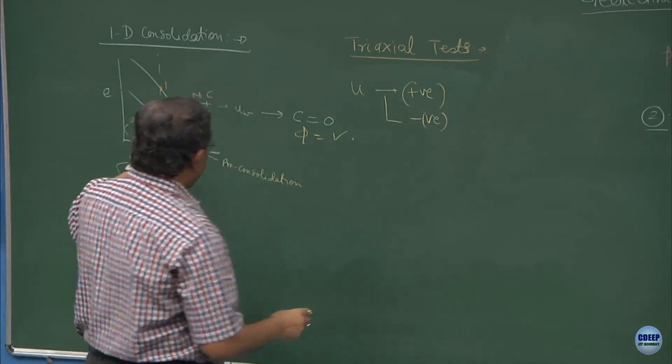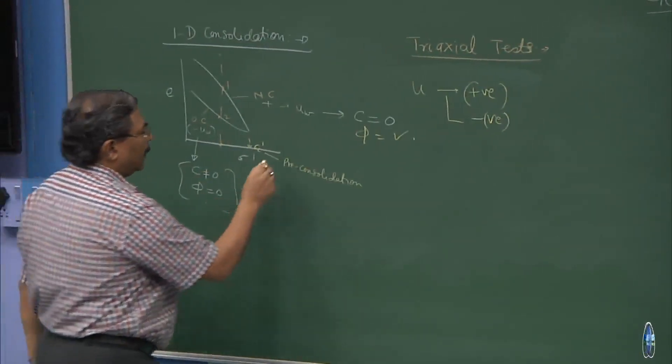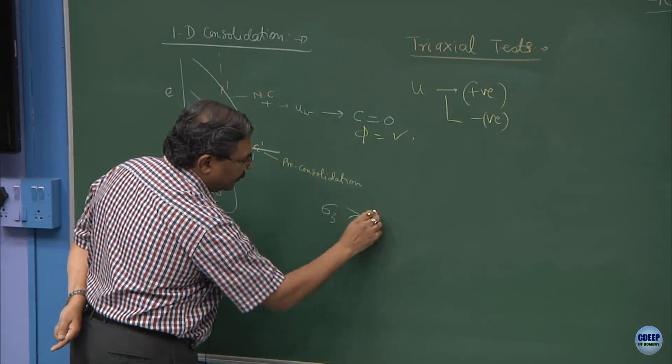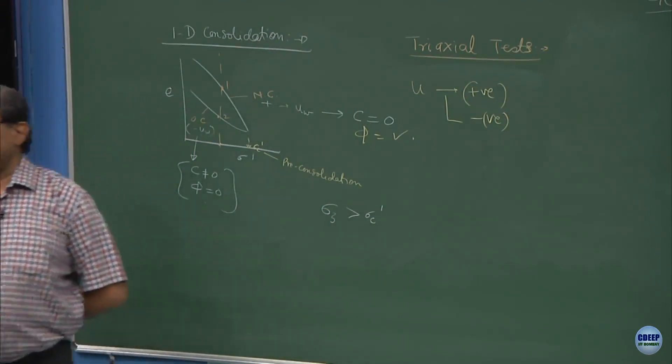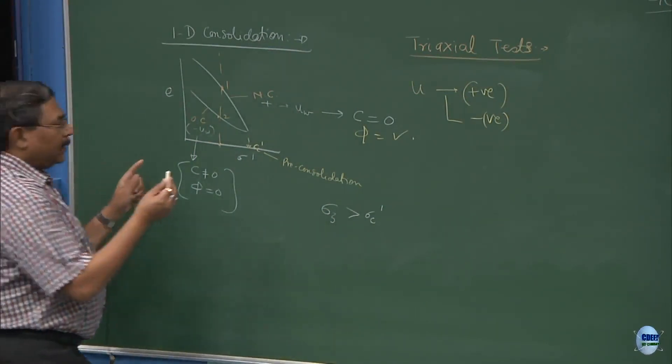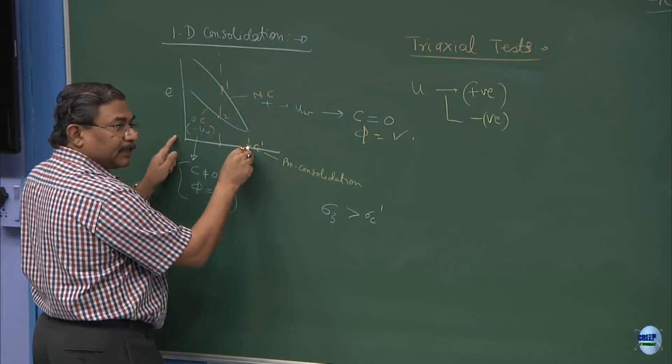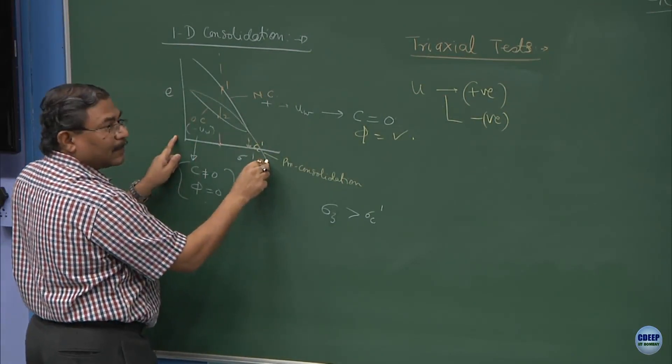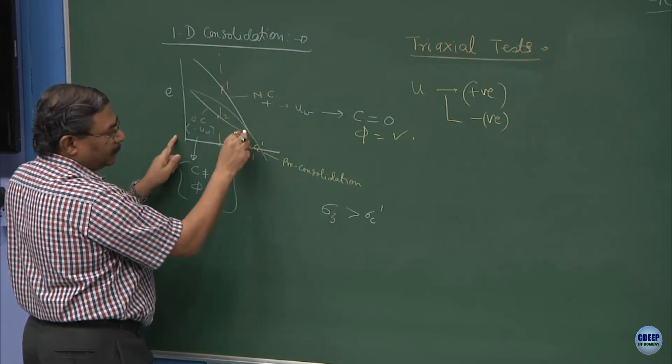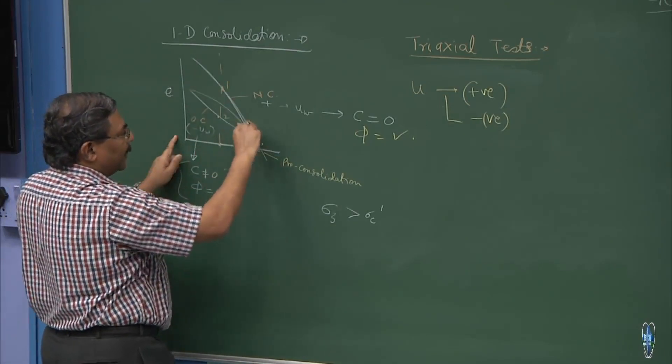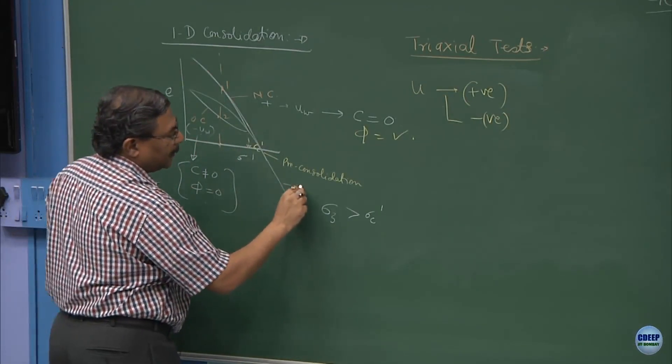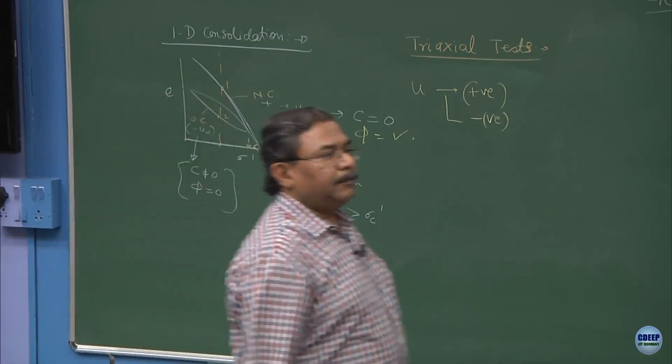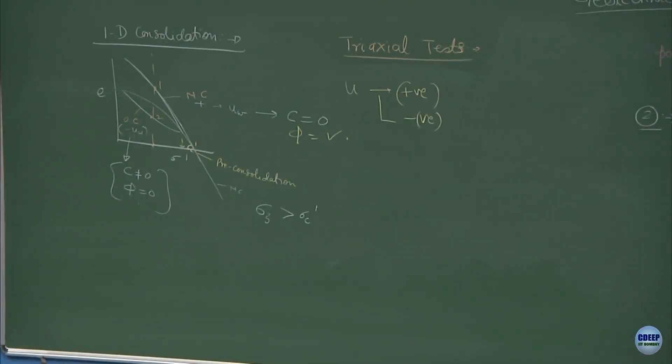If I write a situation where sigma 3 is greater than sigma c prime, what is going to happen? I have crossed this limit of stressing the sample, I am working in a higher stress range. This system behaves as if nothing has happened to it. This becomes NC material. As long as the confining stresses are more than the pre-consolidation pressures, the pore pressures are always going to be positive.